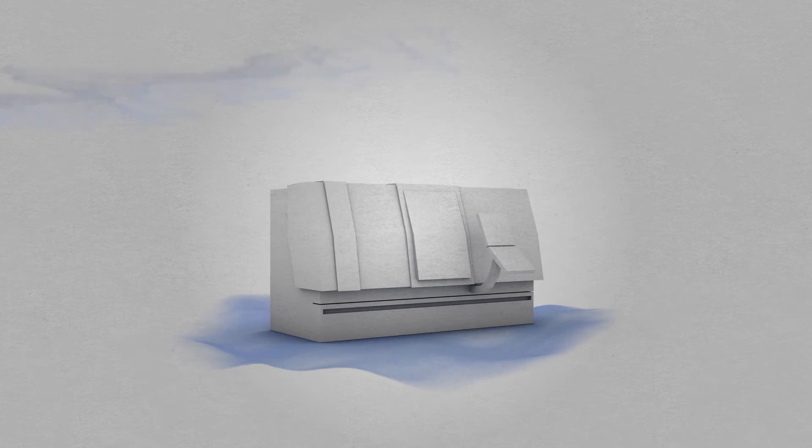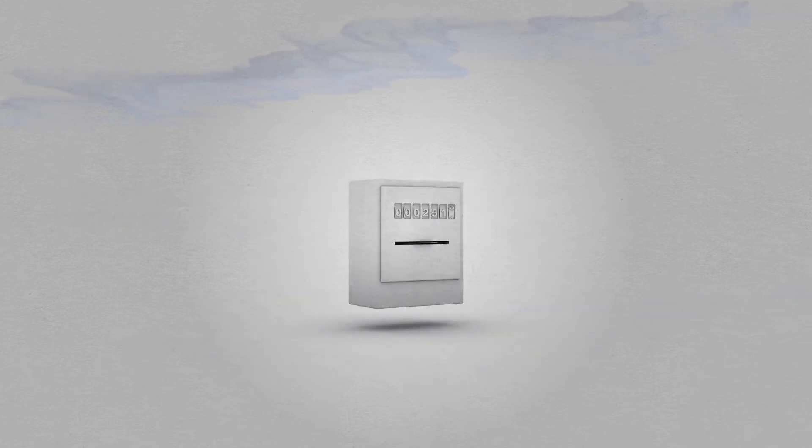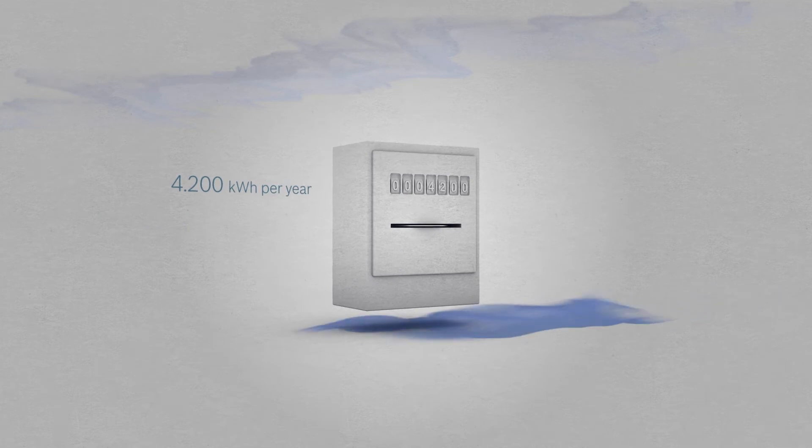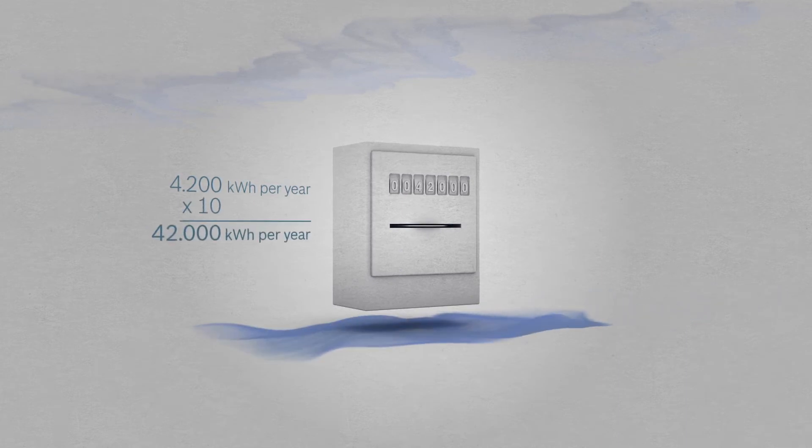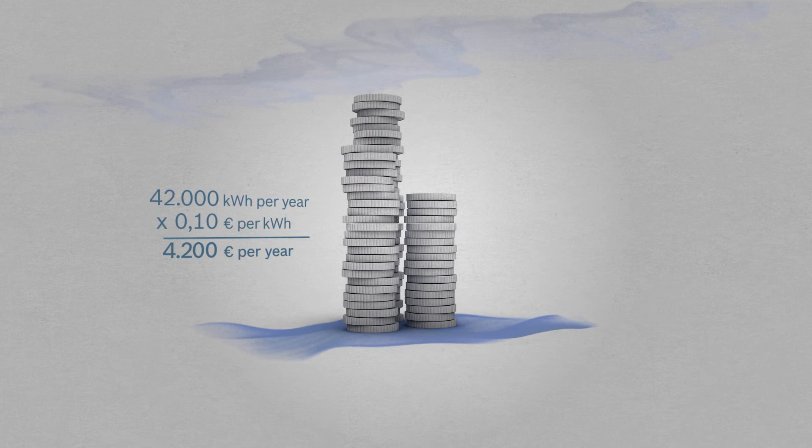For a feeding time of 45 seconds and a turning time of 5 seconds, a conventional hydraulic drive requires approximately 4,200 kilowatt hours per year. For 10 machines, that adds up to a total of 42,000 kilowatt hours. At the price of 10 cents per kilowatt hour, your energy costs amount to 4,200 euros per year.